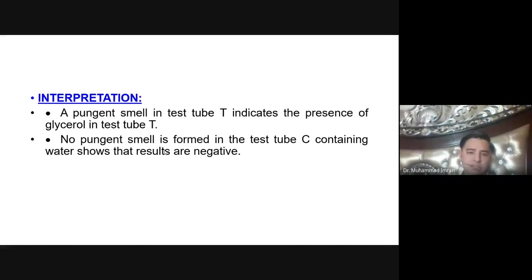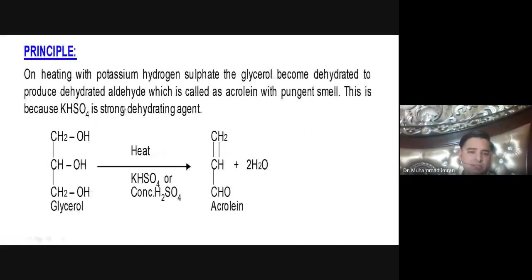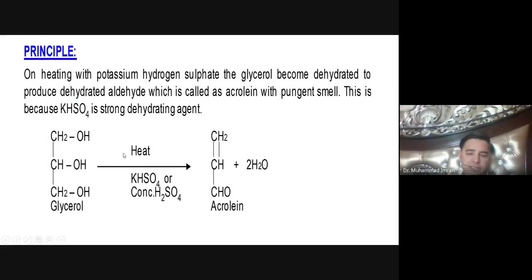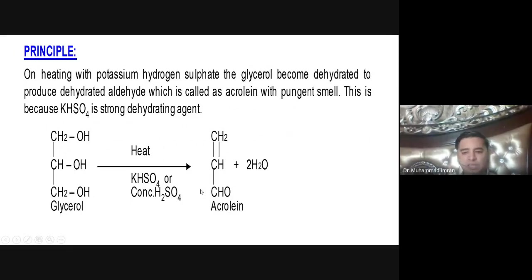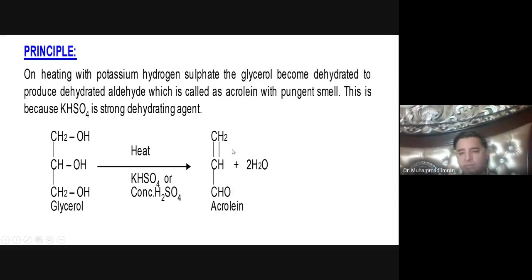What is the principle of this test? The glycerol-containing lipid takes some time to produce acrolein. What happens is: potassium hydrogen sulfate or concentrated sulfuric acid dehydrates the glycerol and produces an aldehyde known as acrolein, with the production of two molecules of water. This acrolein gives a pungent smell.